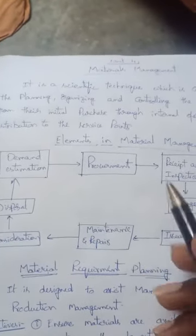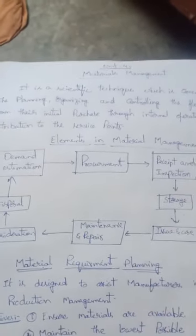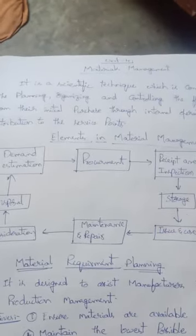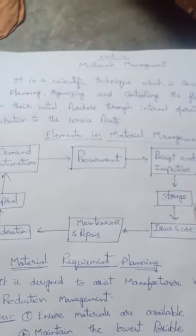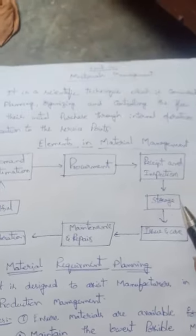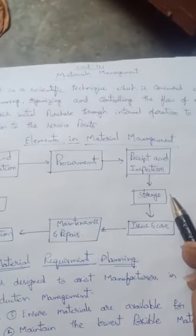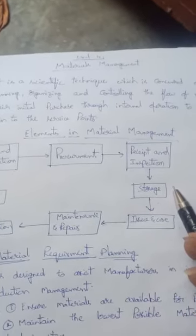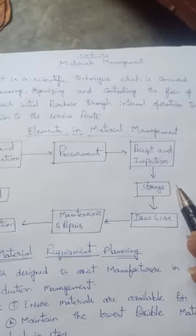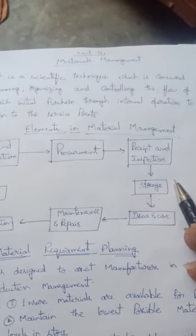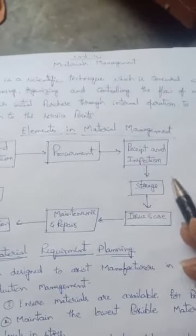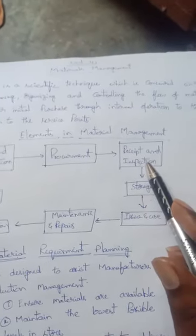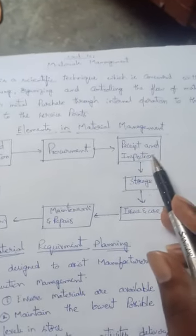The next category is procurement, which is nothing but collecting — by way of purchasing different raw materials, collection of raw materials is very important. The third element is inspection: if there are any quality standard issues, through the inspection or examination process they can identify damage and other disqualifications of raw materials.